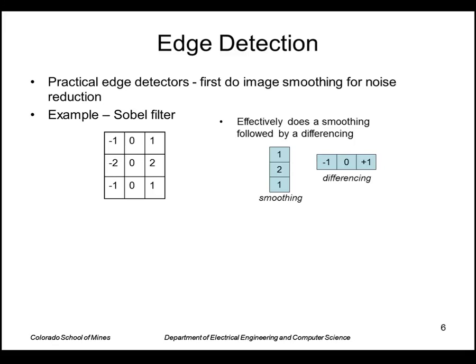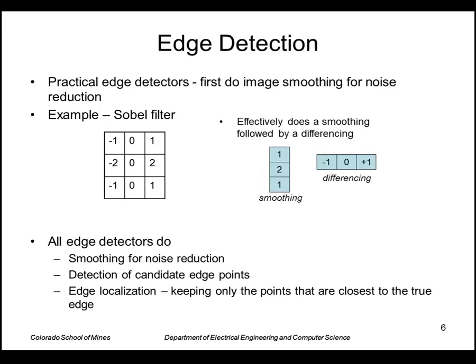The Sobel is an example of this. This is the standard Sobel filter for x derivative. It effectively does a smoothing like this followed by a differencing. So all edge detectors do this: they do smoothing prior to differentiation.